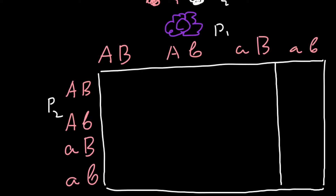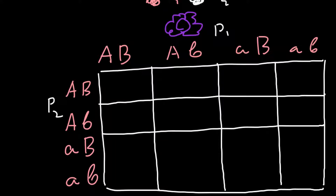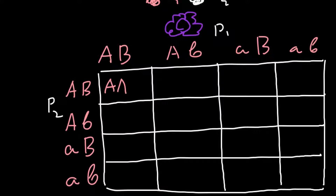If we build a Punnett square, it would have 16 cells. As you remember, we have a phenotype ratio of 9 to 7, and 7 plus 9 equals 16. This is another hint that this trait is under the control of two genes.